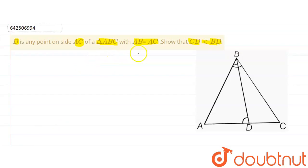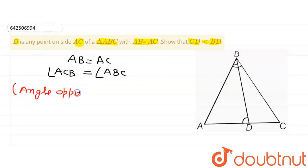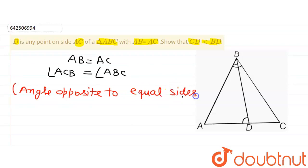The question says that side AB is equal to AC. So if we observe in this triangle, if AB is equal to AC, then the angle opposite to AC, that is angle ABC, will be equal to the angle opposite to side AB, that is angle ACB. So we will have angle ACB equal to angle ABC. Reason: angles opposite to equal sides are equal.